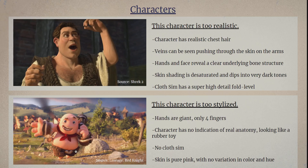This is another example pushing too far in the other direction — from an advertisement series for Lineage, Red Knight. This character is the exact opposite. The hand is giant, only has four fingers, Simpson style. There's no indication whatsoever that this character has any sort of real anatomy — bones or organs. It's just a block, which makes him look like a rubber toy. The skin tone is all one tone — brown on the leather is all one tone — very flat and unvaried. And again, getting into this rubber toy look.